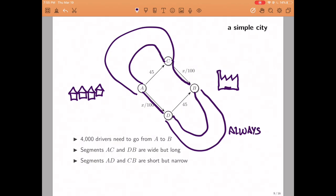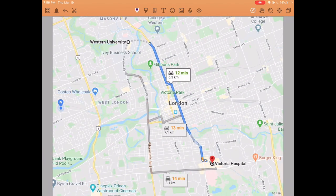And then there are these short segments, A, D and C, B, which are very short and straight, but they are also narrow. So they are going to be affected by traffic. The amount of time that it takes to travel this segment is going to be x over 100, where x is the number of cars using. So the more cars, the longer it takes to go through these segments.